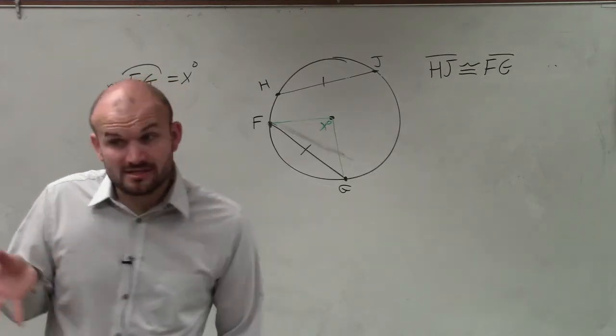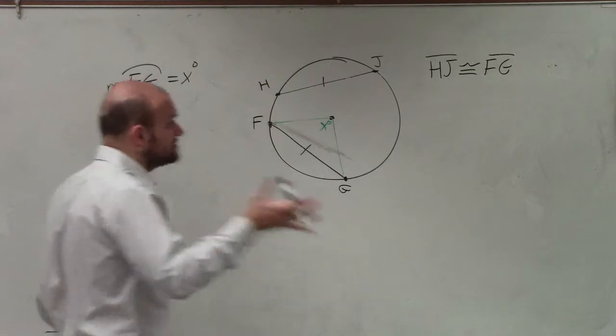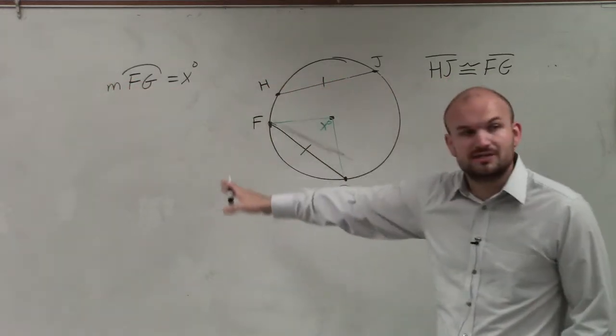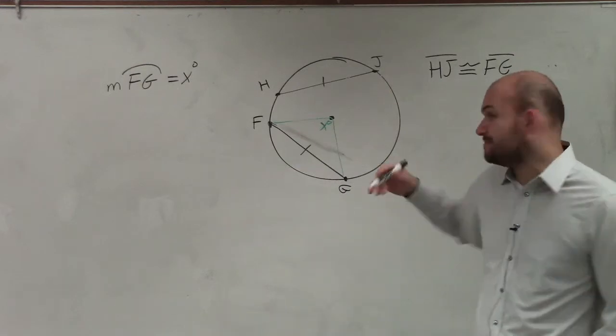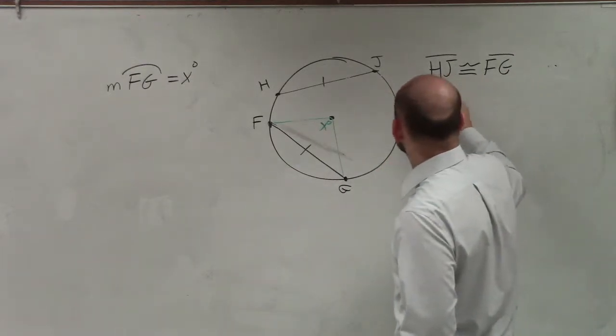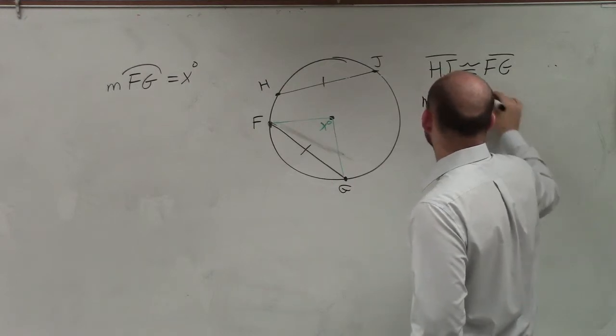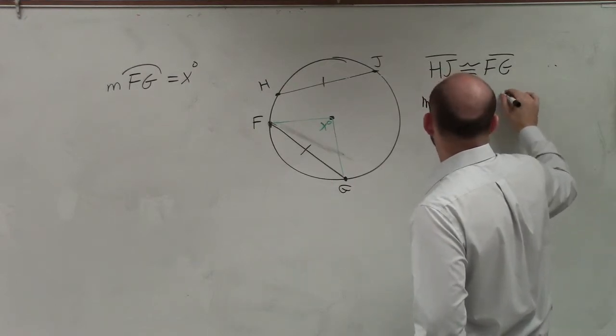two chords, it doesn't matter where they are. They're exactly the same measurements. Then their arcs are also going to be exactly the same measurement, meaning measure of FG is going to be congruent to the measure of HJ.